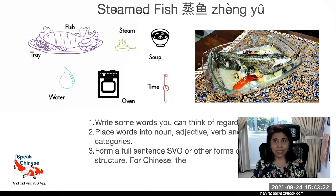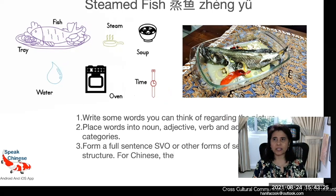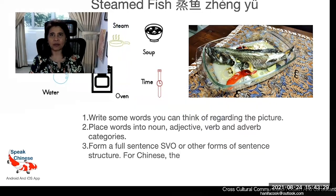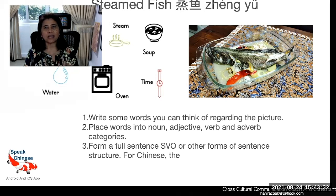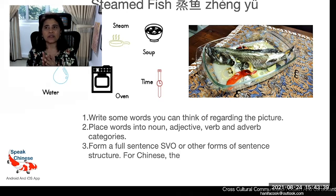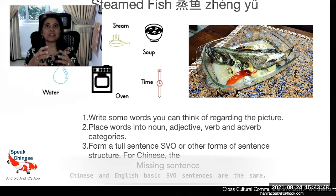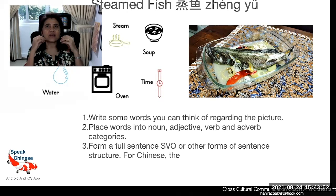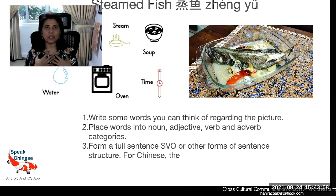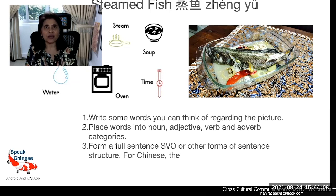The next thing you can do is place these words into categories: noun, adjective, verb, adverb. Then you form a sentence using SVO. When we look at a picture or a word, we start to say the words and immediately want to form a sentence. We are social beings, and when we are excited about something, we immediately want to form a sentence because that sentence will help us convey a message to our friend.